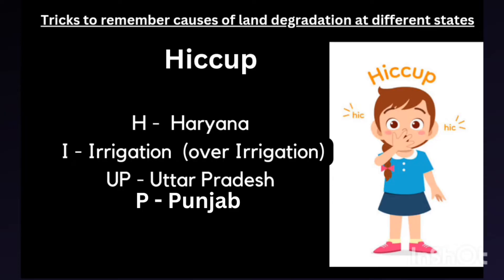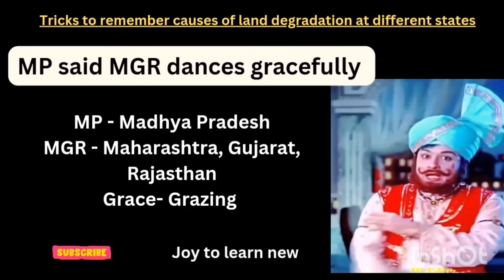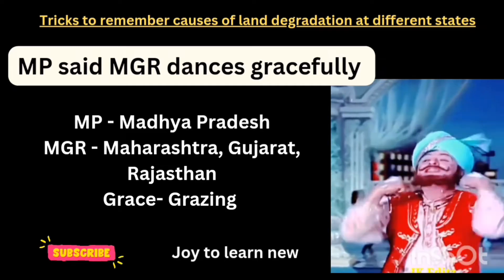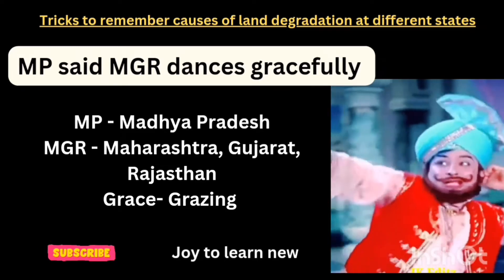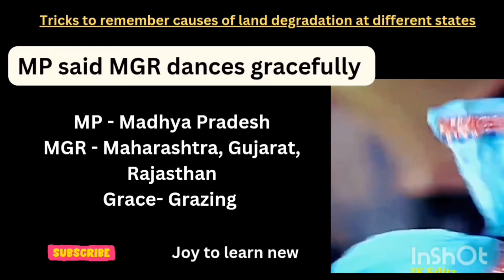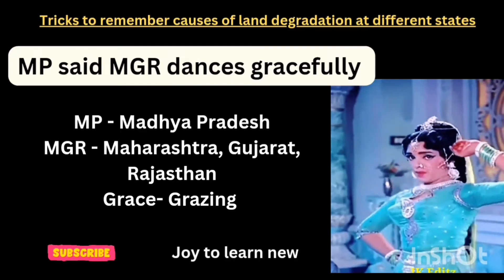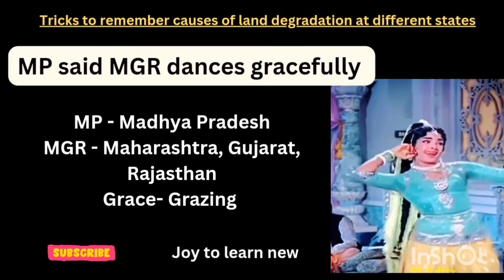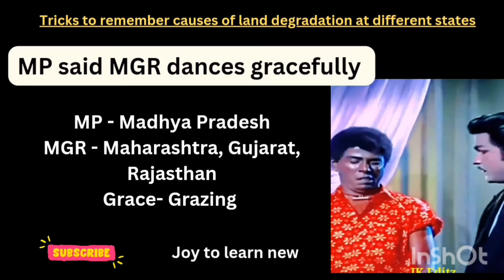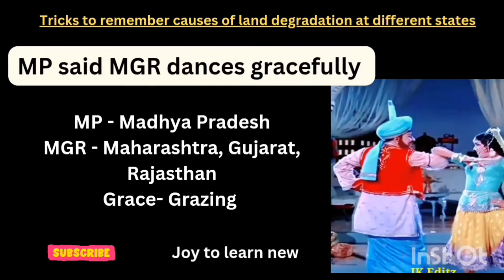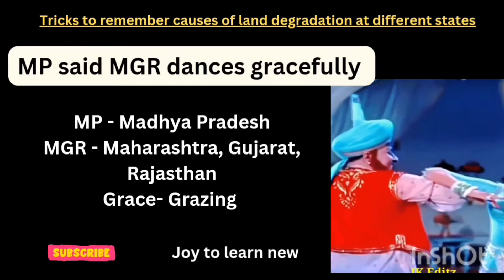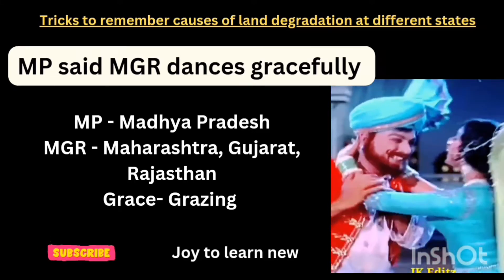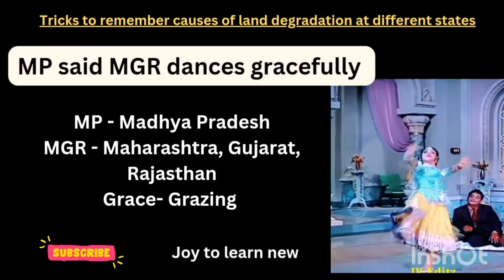The second shortcut is 'MPZ MGR dances gracefully.' MGR was a good actor and Chief Minister of Tamil Nadu — using his name we can relate the states. MP represents Madhya Pradesh; in MGR, M stands for Maharashtra, G for Gujarat, and R for Rajasthan. 'Gracefully' gives us the word 'grazing' — so overgrazing is the reason for land degradation in Madhya Pradesh, Maharashtra, Gujarat, and Rajasthan.